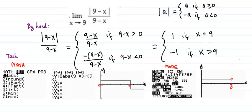We're finding the limit as x goes to 9 of the absolute value of 9 minus x over 9 minus x. We're going to do it by hand, so we have to handle this absolute value.